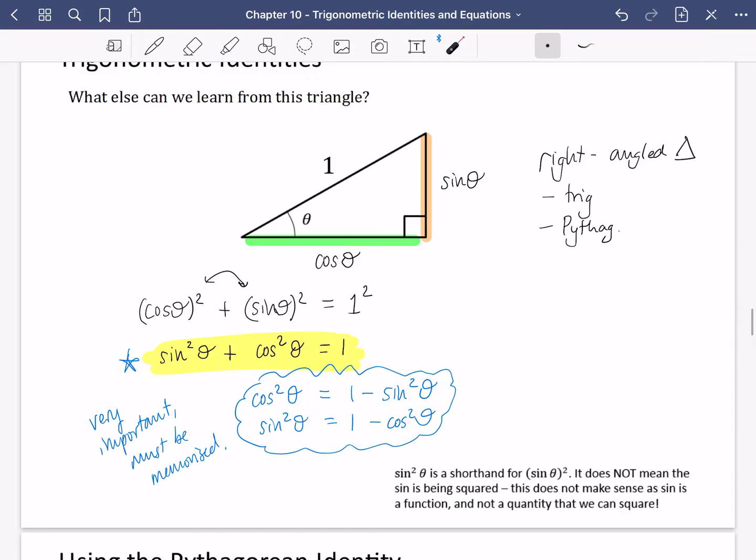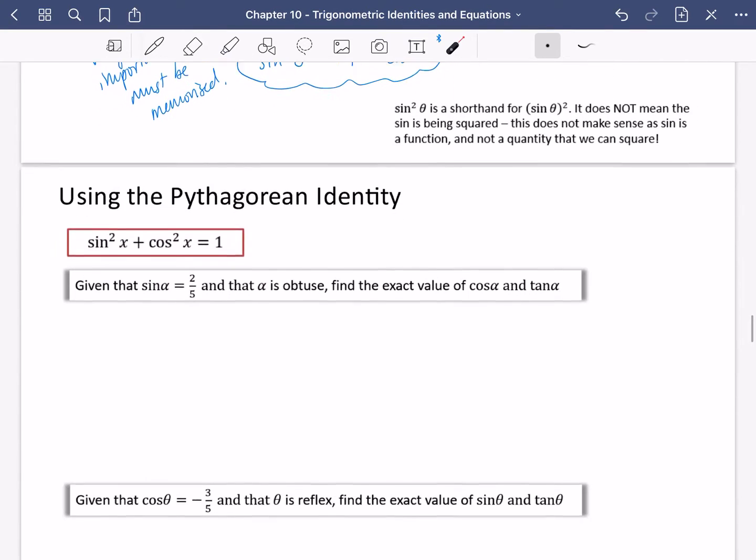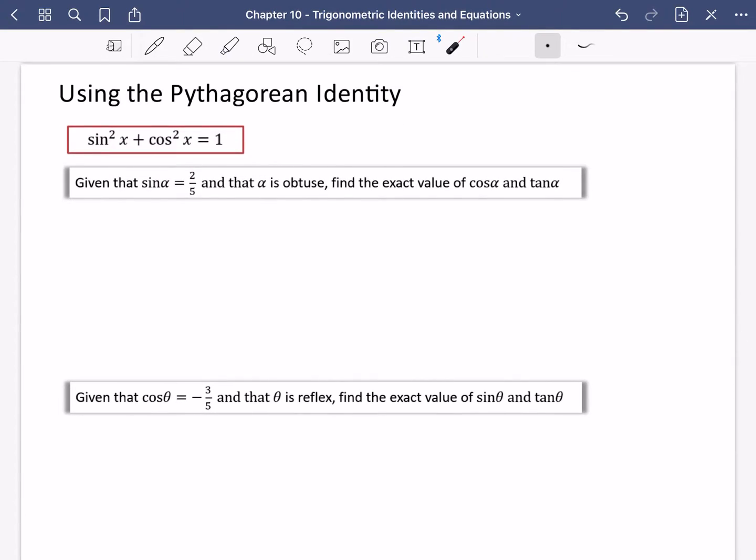Okay, so how do we use the Pythagorean identity? It's called the Pythagorean identity because it comes from Pythagoras. Let's try and connect this to some other things. Given that sine alpha—this little symbol down here is called alpha, and you start off by going from here down and around like that, kind of like a little fish sort of shape like this. Okay, alpha.